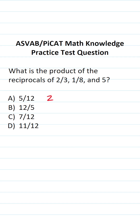On the ASVAB and PyCat, you're not given a reference sheet or a calculator. So before we can multiply these things together to find the product, we first have to find the reciprocals of each of them.